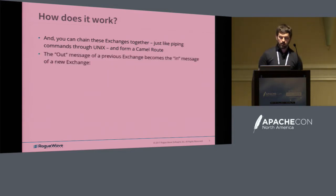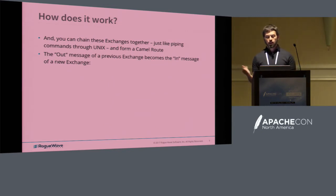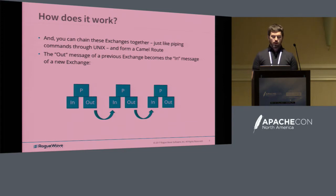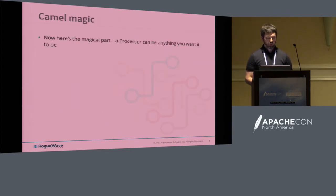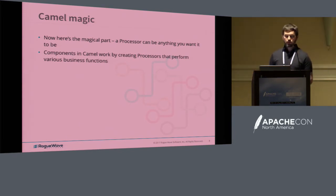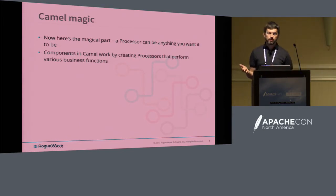The lab will actually be a content-based router based on this. The out-message from your previous exchange becomes the in-message for your next exchange. Or you can shoot it out to another file, an HTTP endpoint, JSON, anything you want — it can go to another message bus. These chain together pretty consistently. You have a pipeline — it's like Lego blocks. The magical part is that the processor can be anything you want it to be. You can create your own processors to do whatever you need to do in your business.